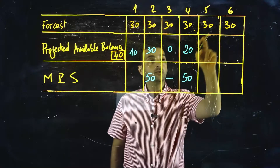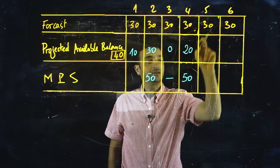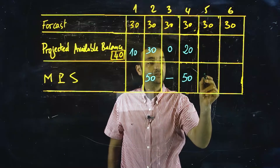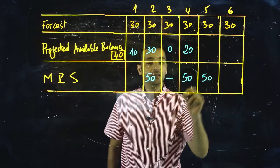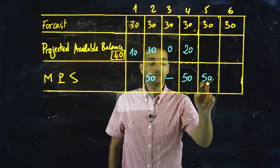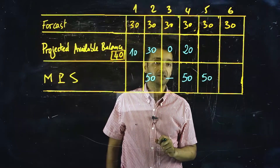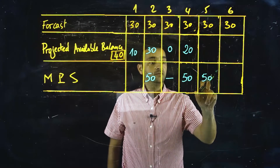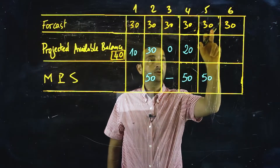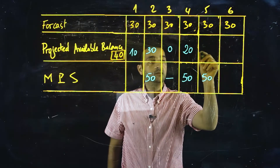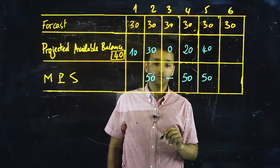20 cannot cover the next period, so we need to schedule another MPS receipt. 50 is always the same value because this is the lot size. 50 plus 20 minus 30, and the new projected available balance will be 40.